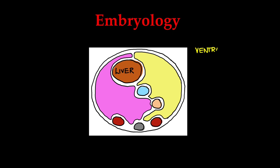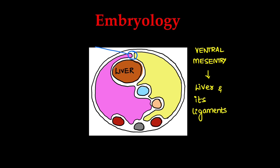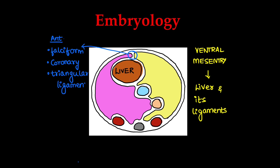The liver develops from the ventral mesentery and its ligaments also develop from the ventral mesentery. Anteriorly there is the falciform ligament, coronary ligament and triangular ligaments — these form the anterior part of the ventral mesentery. The dorsal part of the ventral mesentery gives rise to the lesser omentum, which lies between the liver and stomach.